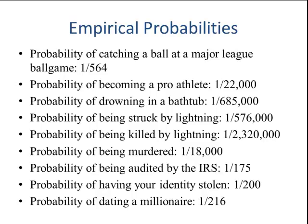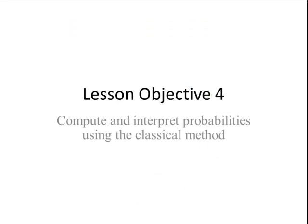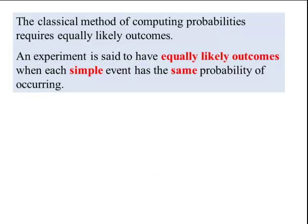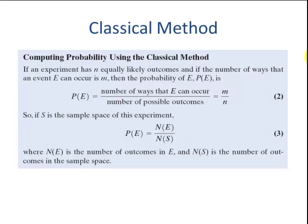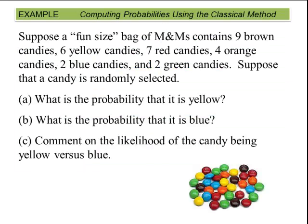These probabilities are estimated using the empirical method. Lesson objective number 4, using the classical method. The classical method of computing probabilities requires equally likely outcomes. An experiment is said to have equally likely outcomes when each simple event has the same probability of occurring. Here's the formula for the classical method: you take the number of ways E can occur and divide that by the total number of possible outcomes. Notice you do not have to perform an experiment. You simply count how many ways the event E can occur and divide that by the total number of possible outcomes. This is stronger than the empirical method. Let's look at an example.